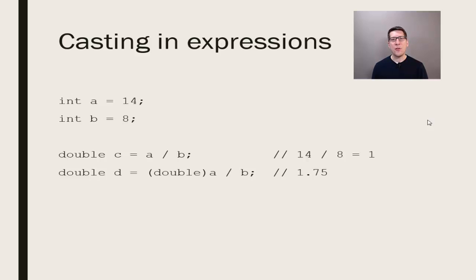When there are two data types in an operation, the Java compiler will automatically promote the smaller type to the larger size type. A double is 8 bytes, so the integer, which is 4 bytes, will be promoted to the larger size. The result is of type double.